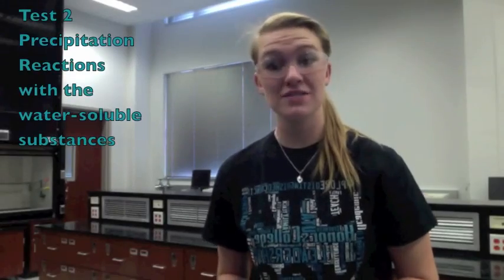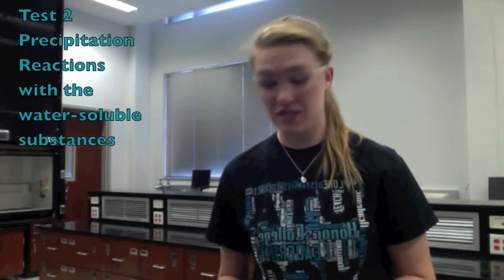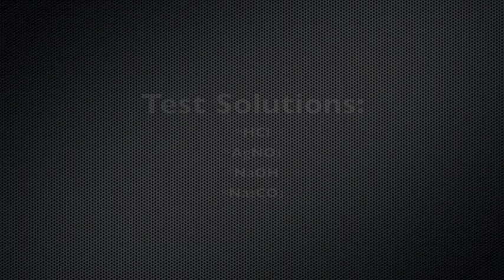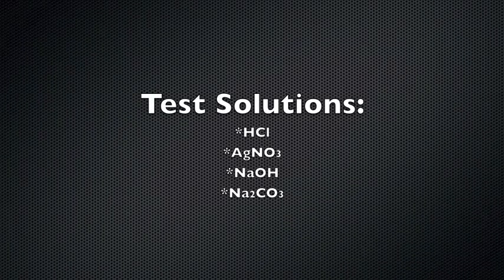In the next part of the experiment, you will be using precipitation reactions to determine the identity of the water soluble substances. By adding a test solution, we can observe if a precipitate forms in the solution with the unknown salt. The presence of a precipitate will reveal the identity of the salt, because only certain combinations of a test solution and the water soluble compound will form a precipitate.